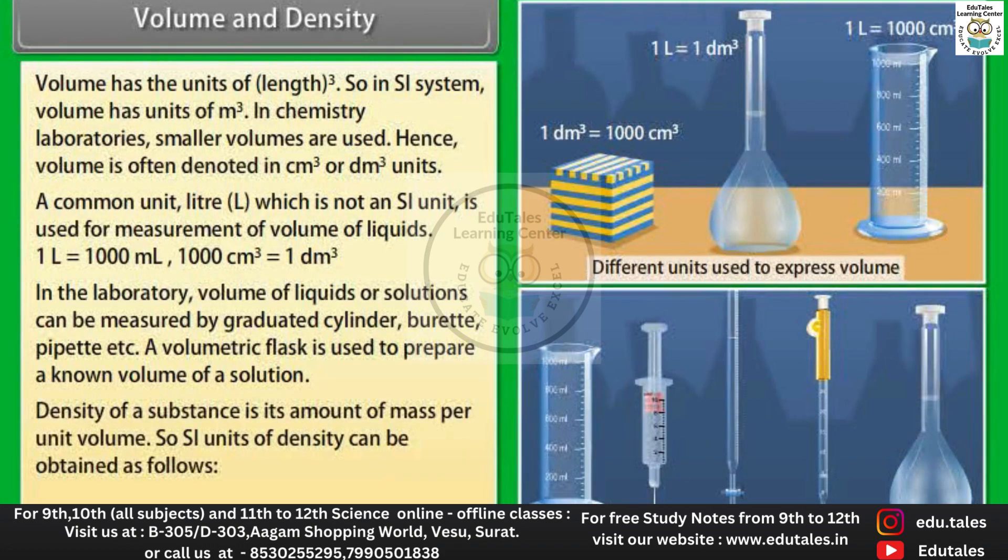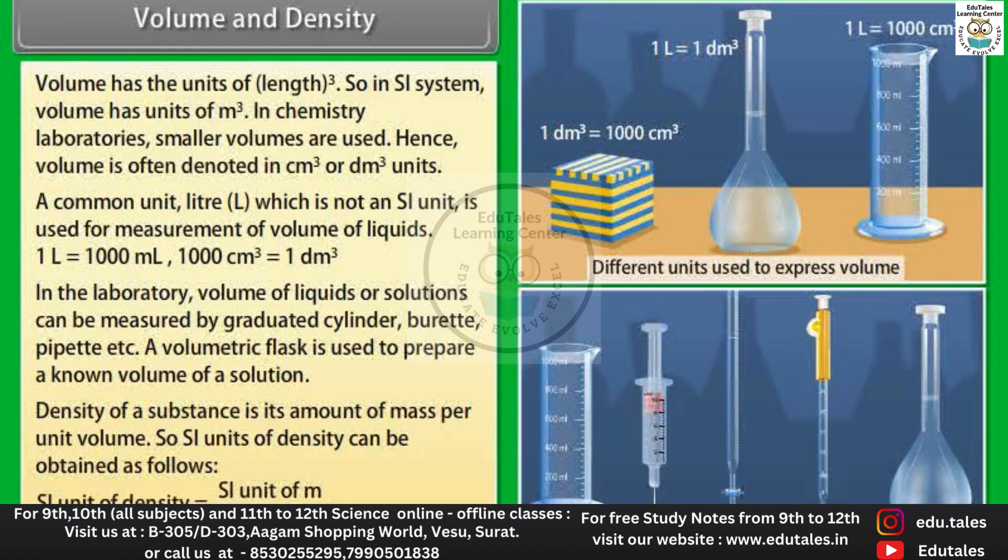Density of a substance is its amount of mass per unit volume. So SI units of density can be obtained as follows: SI unit of density is equal to SI unit of mass upon SI unit of volume, which is equal to kg/m^-3 or g/cm^-3.